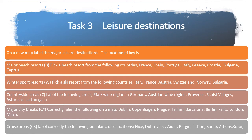For the countryside area, label the following areas — such as the Austrian wine region, Provence, etc. You also need to put in the major city break areas: Dublin, Copenhagen, Prague, Tallinn, Barcelona, Berlin, Paris, London, and Milan. Those are your major city break areas.